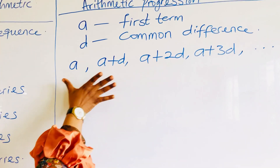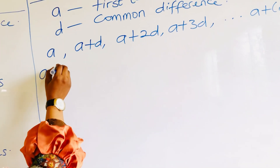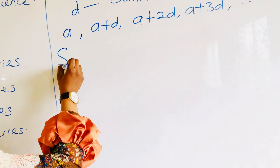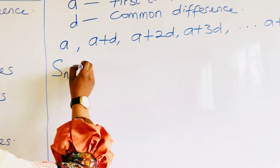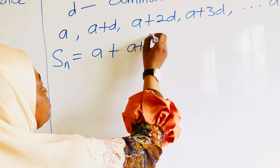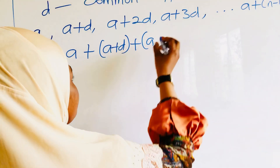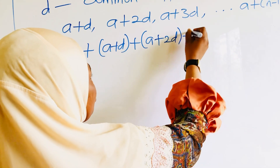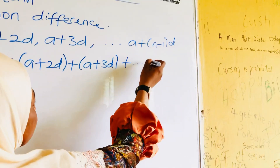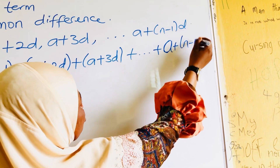So here is the sequence. Now we want to write it in series form. The sum Sn will be equal to a (the first term), plus the second term (a plus d), plus the third term (a plus 2d), plus a plus 3d, and so on, all the way to the nth term, which is a plus (n minus 1)d. Let's call this Equation 1.